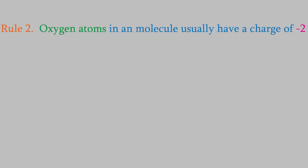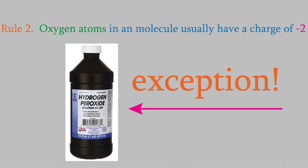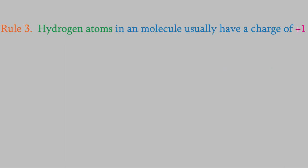The second rule is that oxygen atoms in a molecule will usually have a charge of minus two. There are definitely exceptions to that rule — for example, the oxygens in hydrogen peroxide actually have a charge of minus one instead of minus two — but we won't need to worry about those exceptions in this course. The third rule is that hydrogen atoms in a molecule will usually have a charge of plus one. Again, there are a few exceptions, but you won't need to worry about them in this class.